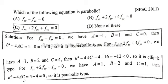4 times 1 times 1, 4 times 1 equals 4, so 4 minus 4 equals 0. So it is parabolic type. Option C is correct: f_xx plus 2f_xy plus f_yy equals 0.